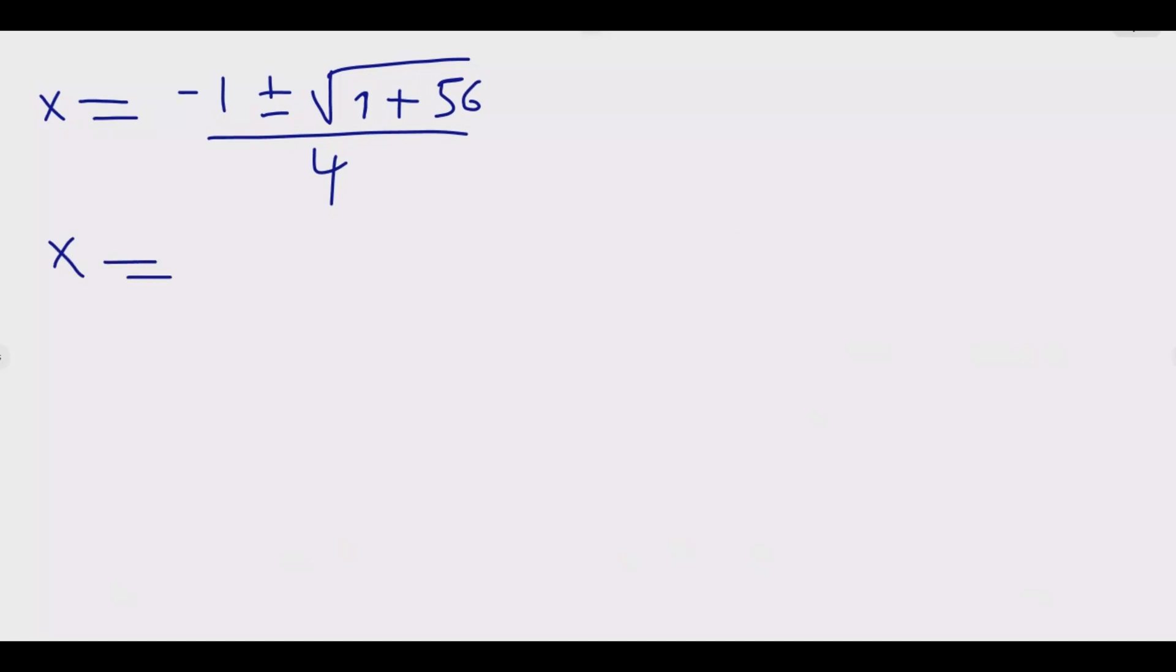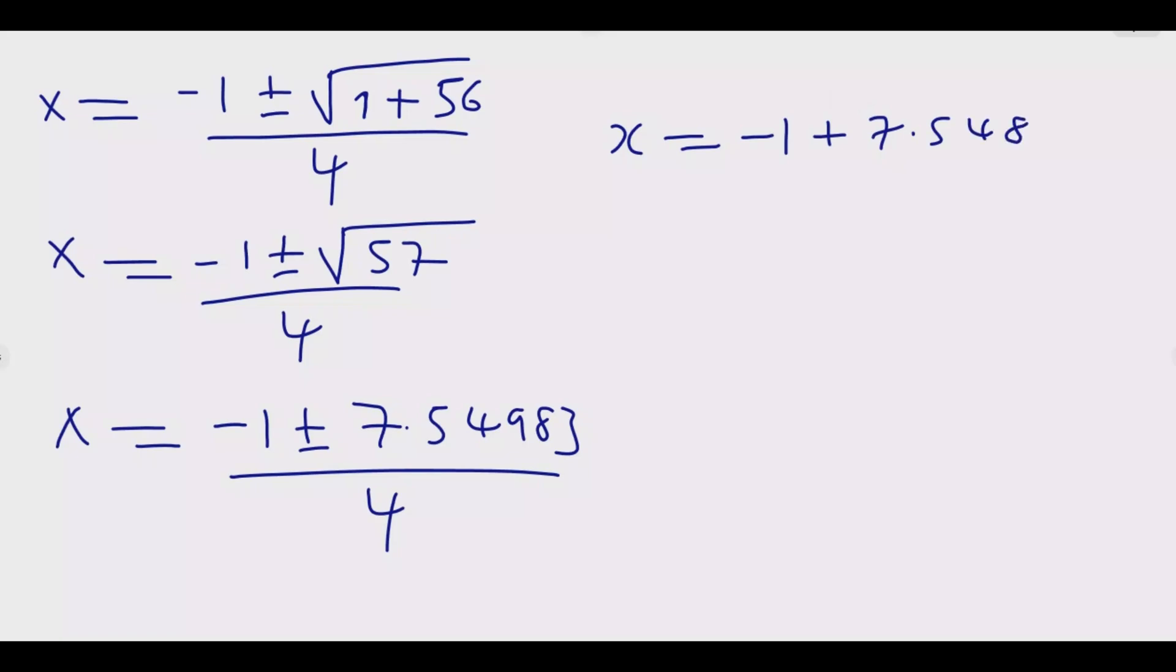So we're going to have 1 plus 56, then over 2 times 2 is 4. So x equals minus 1 plus or minus square root of 57 over 4. Then x equals, what's the square root of 57? Use a calculator. So minus 1 plus or minus the square root of 57 is 7.54983, then divide by 4.